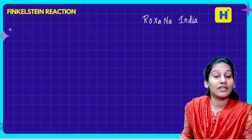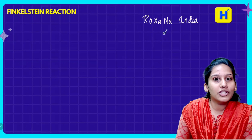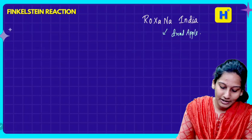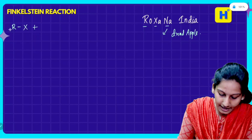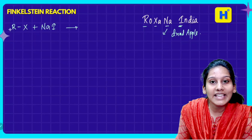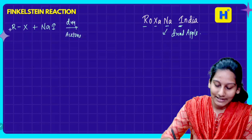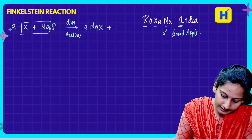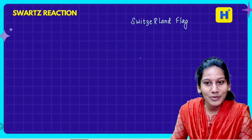This is the Finkelstein reaction. Raksona — India. If you want to add any fruit, try apple — meaning acetone. So RX and NaI: that is alkyl halide, and here is I. Sodium is also I, so NaI — I in India stands for iodide. In acetone, the reaction proceeds as usual to give 2 sodium halide and alkyl iodide. This is the Finkelstein reaction.